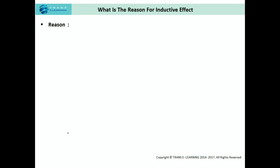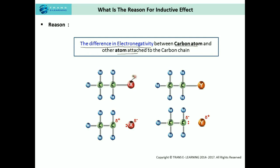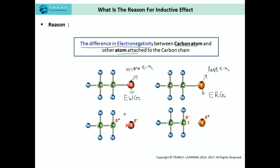Now, what is the reason for the inductive effect? The most important reason is the difference in electronegativity between the carbon atom and the other atom attached to the carbon chain. When the attached atom is more electronegative than the carbon chain, it acts as an electron withdrawing group. When it is less electronegative, it acts as an electron releasing group — that is, electron donating in nature. When these electron withdrawing or electron releasing groups are attached to the carbon chain, there is permanent polarity induced on the carbon and the carbon chain.